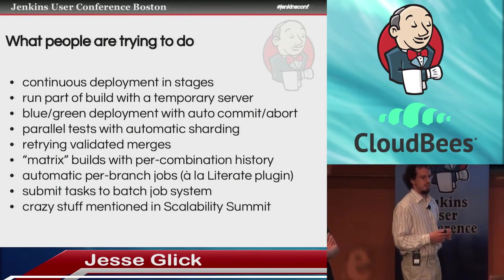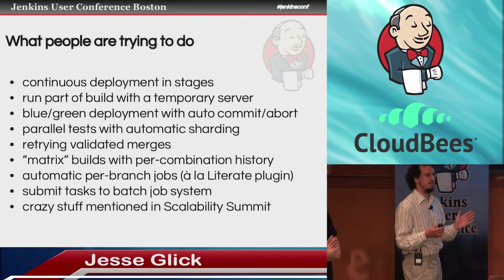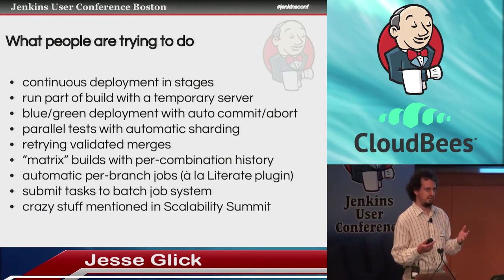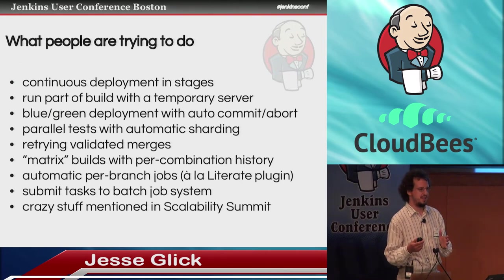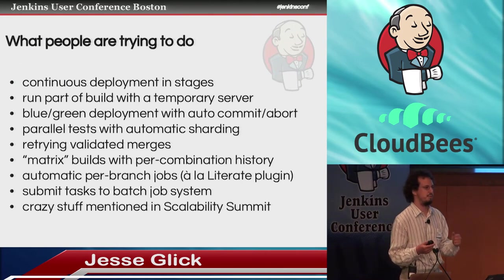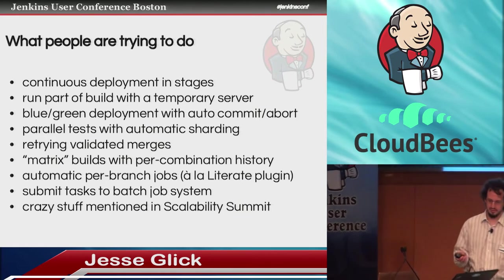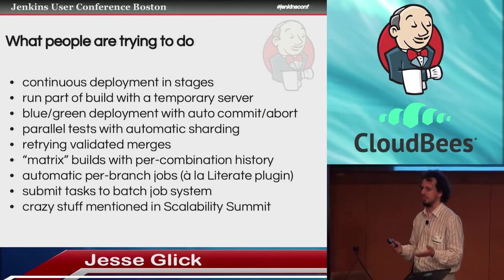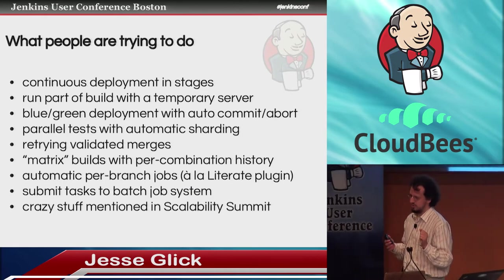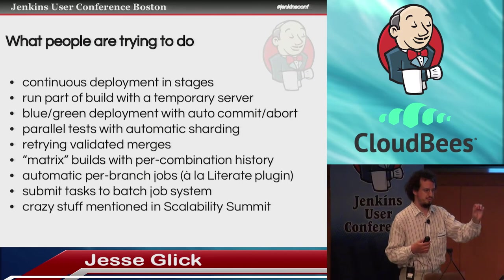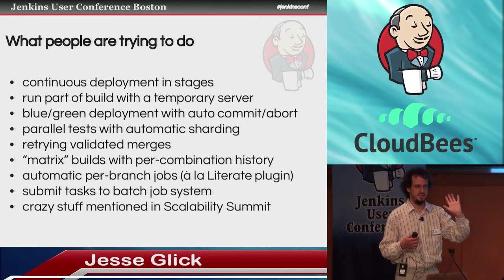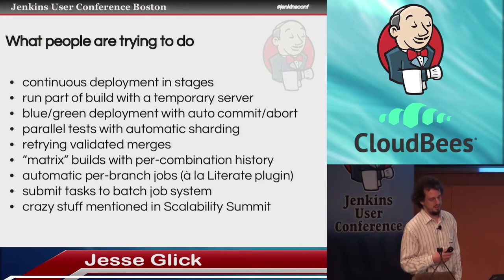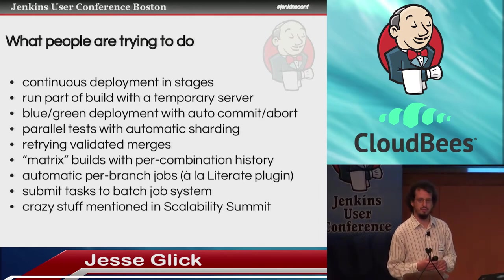One critical use case is continuous deployment where things run in stages. You'd have a basic build job, then heavier duty tests in the next stage using the output from the first stage. Then perhaps forking off further tests to run in parallel using an application deployed to a test server. Then a final human approval step where somebody says they don't see anything obviously wrong, and the build can go on to deploy to production. That's a pretty central use case for something like Jenkins.